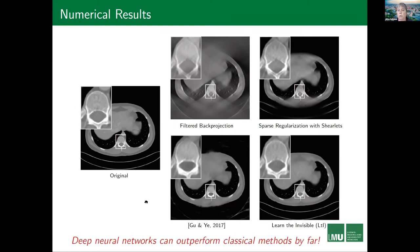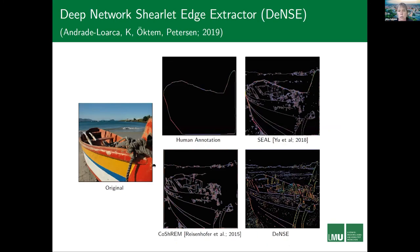Deep neural networks can outperform classical methods sometimes by far. This philosophy — driving the model-based approach as far as it goes, then complementing with learning — can also be applied to other classical tasks like edge detection, where the deep learning approach not only does edge detection but also detects the wavefront set, with color coding indicating even which direction the edges have.